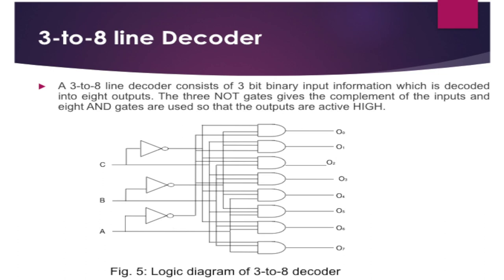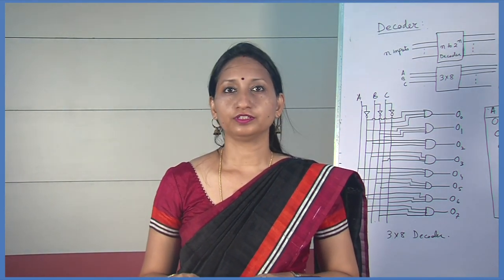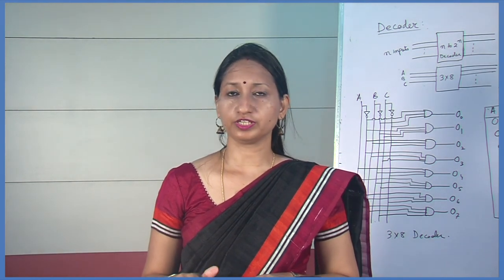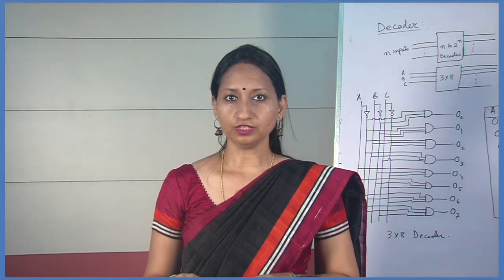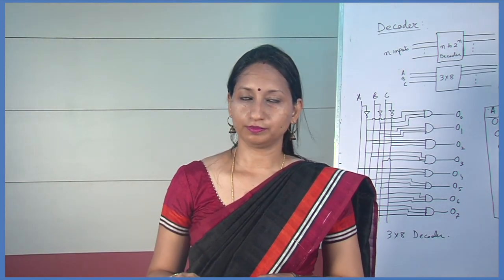The function of a decoder is just opposite to the encoder. A 3-to-8 line decoder circuit can be used in binary to octal conversion. The decoder is also used in some code conversions, for example BCD to 7-segment decoder. Another use of a decoder is that it can be used to implement any combinational logic circuit.